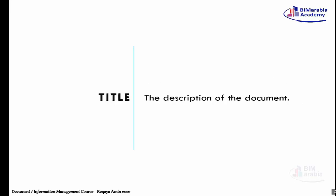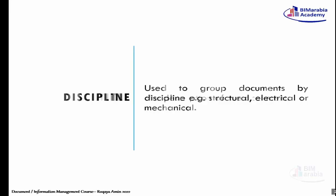نيجي بعد كده للـ Title - ده الـ Description بتاع الـ Document، اسمها والموضوع بتاعها والعنوان بتاعها. بعد كده الـ Discipline - ده الـ Group بتاع الـ Documents دي تابع لمين. بيبقى عندنا Construction، Structural، Electrical، Architecture، Mechanical. ده بيبقى انت بتحاول تصنّف الـ Documents اللي عندك لتصنيفات اكتر علشان تبتدي تـ Control الـ Documents دي.